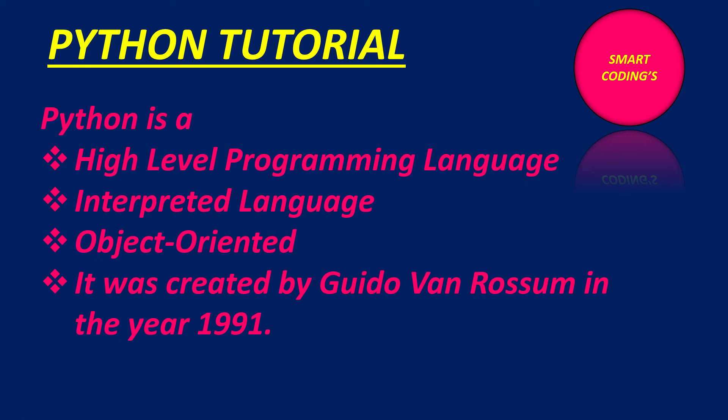Because computer only understands low-level language that is binary language, zeros and ones, and this high-level language must be converted to low-level language so that the computer system can understand that. That's why it is an interpreted language also. Python is a high-level programming language because it has some match with human language also, human readable language, that's why it is a high-level programming language.